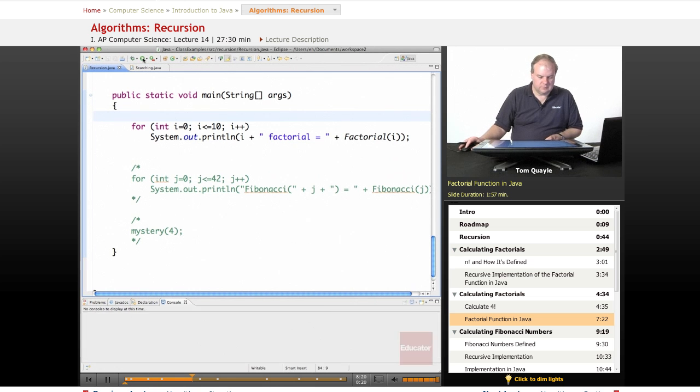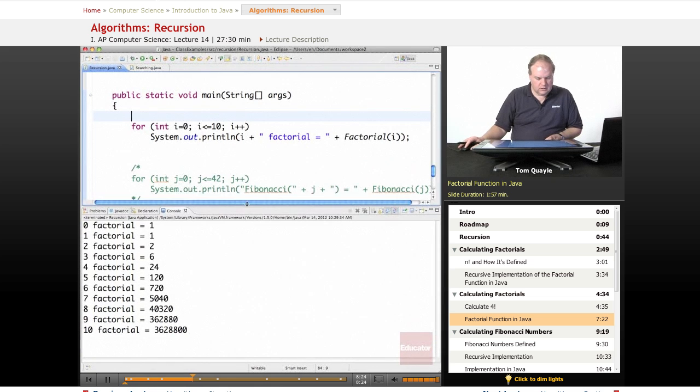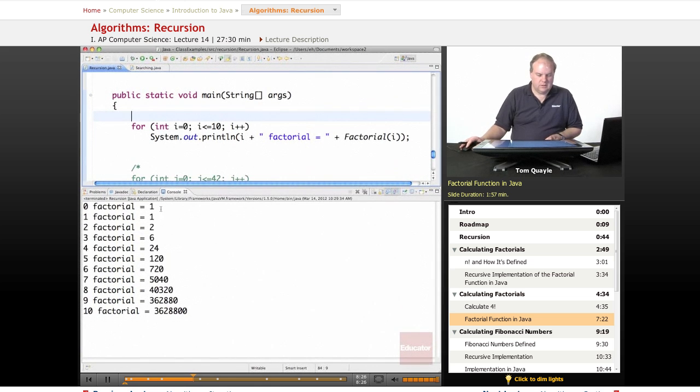So let's run this. And as you can see, zero factorial, that's my base case, is one, and then the numbers get successively larger, and it did correctly calculate all the way up through ten factorial.